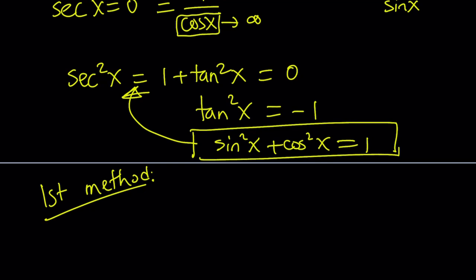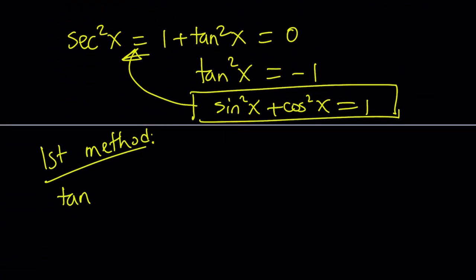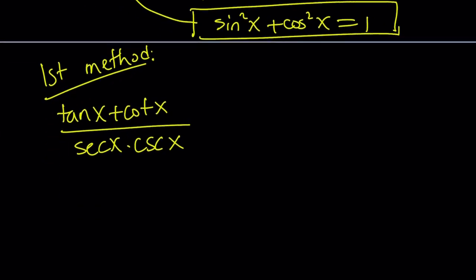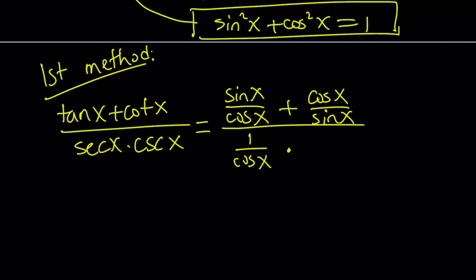So, let's go ahead and turn everything into sine and cosine. Let's rewrite our original problem, tangent x plus cotangent x divided by secant x multiplied by cosecant x. Okay, let's go ahead and replace tangent x with sine x over cosine x, because that's what it is in terms of sine and cosine. Cotangent can be written as cosine x over sine x, which is the reciprocal of tangent. And then at the bottom, secant is the reciprocal of cosine, and cosecant is the reciprocal of sine. All right, so far so good.